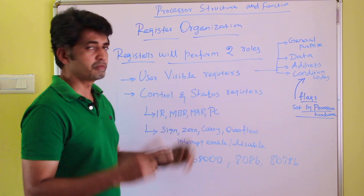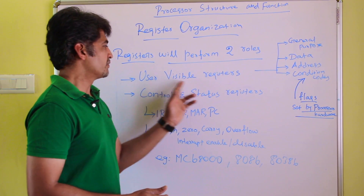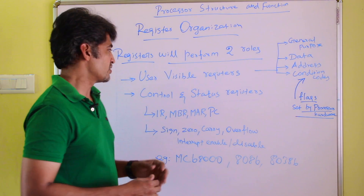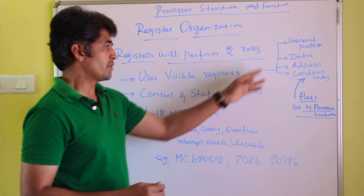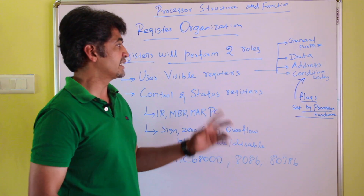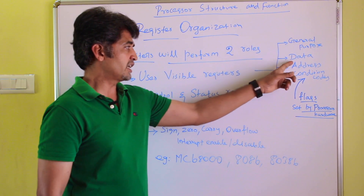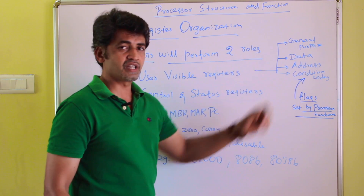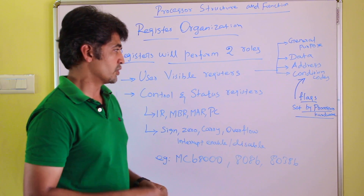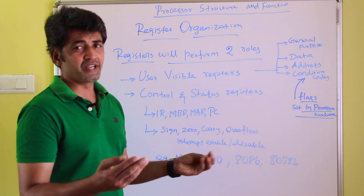Registers perform two major roles: one is user visible registers and the second is control and status registers. User visible registers are majorly divided into four different categories: first is the general purpose register, second is the data register, third is the address register, and fourth is the conditional codes. General purpose registers may be used for basic operations as temporary storage.